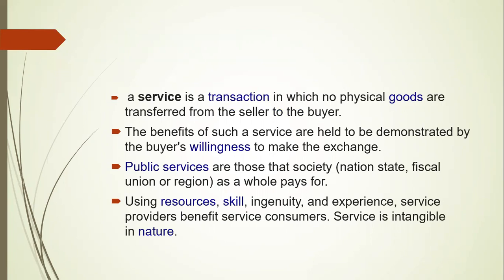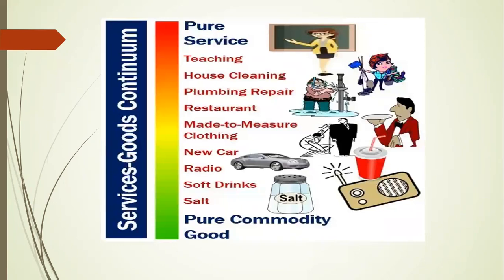Looking at the services-goods continuum: at the upper end is pure service and at the lower end is pure commodity. Teaching, house cleaning, plumbing repair, and restaurants are pure services. As we move down, there is a mix — made-to-measure clothing involves both. A new car purchase is a commodity, but after purchasing a car there will be associated services. Soft drinks and salt fall under pure commodity. A barbershop is again a service, and logistics services are growing heavily.